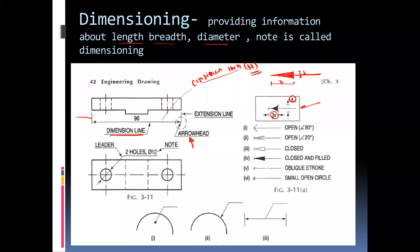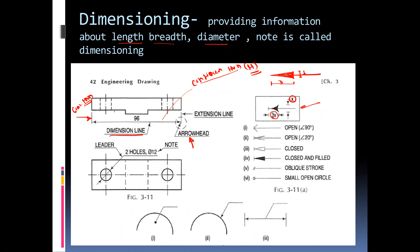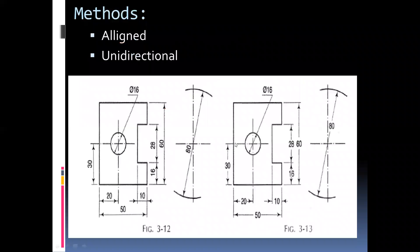After the arrowhead, we specify the extension line, which is extended from the actual feature. The extension line is again a continuous thin line. We need to specify the dimension generally at a distance of 6 to 8 mm from the feature. The two methods to specify the dimension are the aligned dimension method and the unidirectional dimension method.